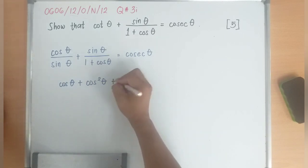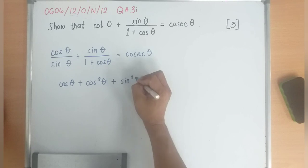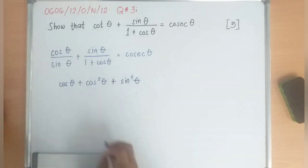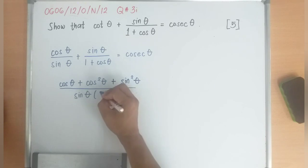Plus sine times sine is sine squared theta. Divided by - of course you can multiply this, but I will just leave it as sine theta times 1 plus cosine theta.